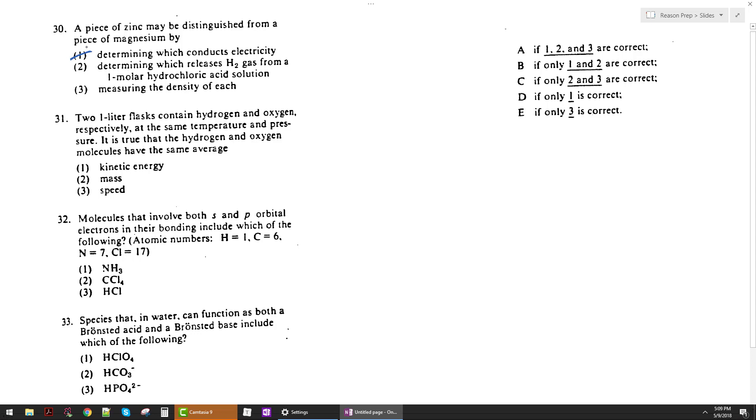How about two, determining which releases H2 gas from a 1 molar HCl solution. So again both of them will do this. The reaction, this is on the factoid sheet, when you react a metal with strong acid HCl, you're going to produce the metal ion plus your H2 gas will be evolved. So this happens if it's zinc or if it's magnesium, so that's not going to tell them apart.